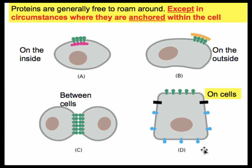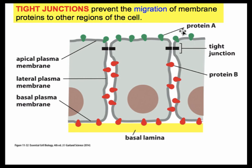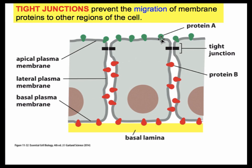In panel D, specialized proteins are found in different regions of the membrane — green proteins at the top of the cell and blue proteins only at the bottom. Black bars indicate regions that prevent proteins from one half passing to the other. In an intestinal epithelial cell, one side faces the digestive tract and the other faces the blood supply. Green proteins pick up materials like glucose from outside and pass them into the cytoplasm, while red proteins pass material from the cytoplasm to the extracellular fluid on the other side.